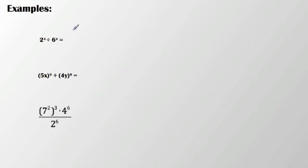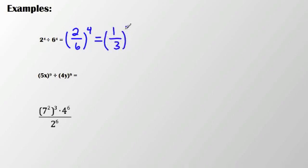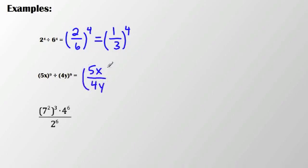Let's take a look at a couple more examples. If I have 2 to the 4th divided by 6 to the 4th, that means I have 2 over 6 to the 4th. I can simplify 2 over 6 and get 1/3 to the 4th — that's simplified. If asked to evaluate, I take 3 times 3 times 3 times 3, which is 81. But if we're just simplifying, we leave it there. Next, 5x to the 9th divided by 4y to the 9th can be written as 5x over 4y to the 9th — simplified form.